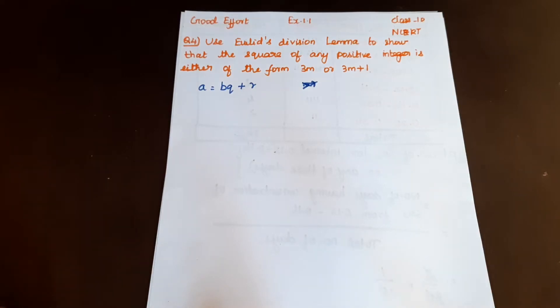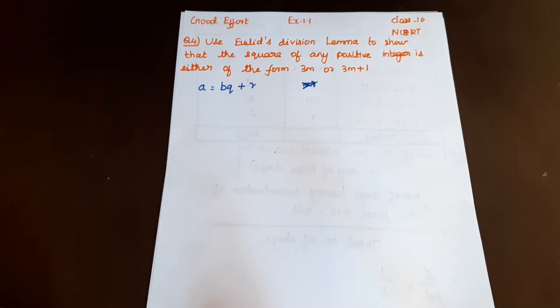Welcome to Good After Channel. Good Morning Students. In Exercise 1.1, question number 4: Use Euclid's division lemma to show that the square of any positive integer is either of the form 3m or 3m plus 1.